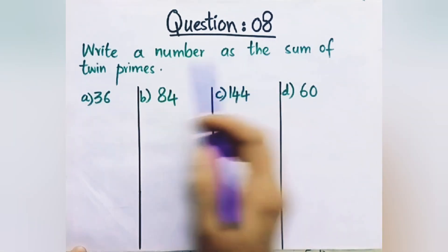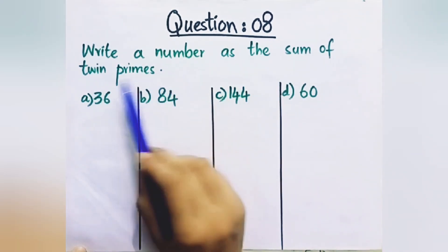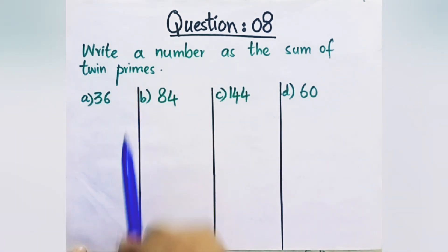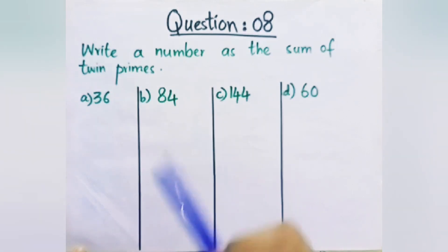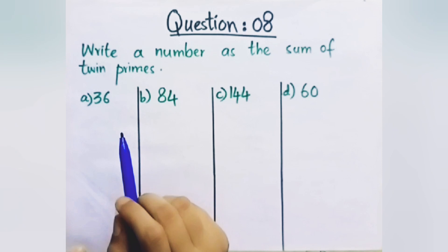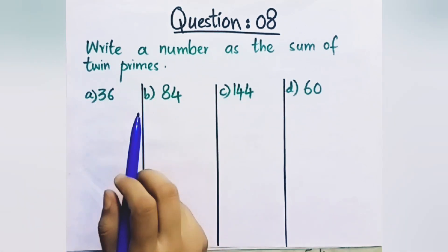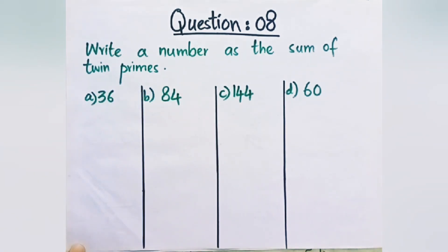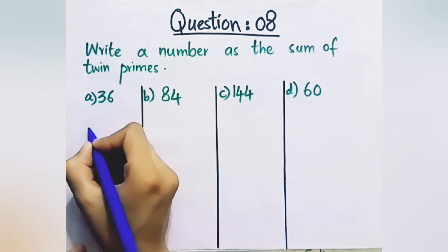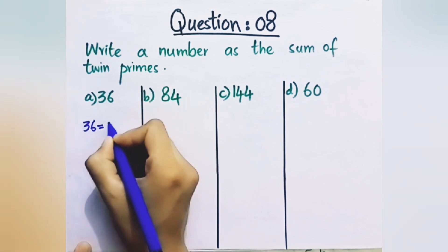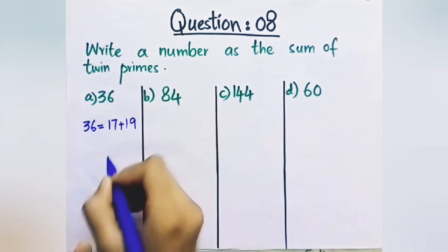Question number 8: Find a number as a sum of twin primes. In this question the requirement is that you divide a given number as the sum of two twin primes. So 36 equals 17 plus 19, and these two numbers are twin primes.